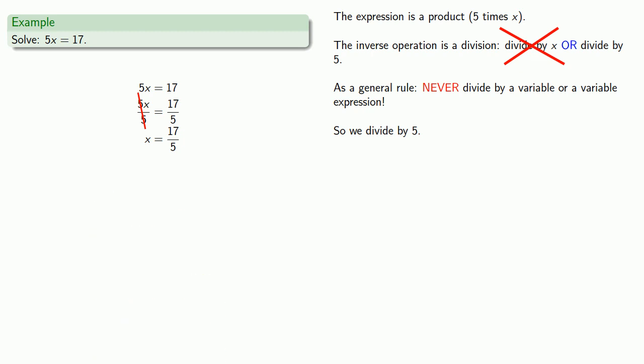As always, we really should check that our solution works. So if x equals 17 over 5, then we should be able to replace x with 17 over 5 in our equation and get a true statement. So we'll make that replacement. And this is true, so x equals 17 over 5 is a solution.